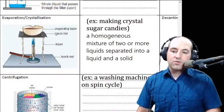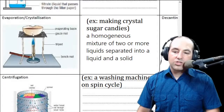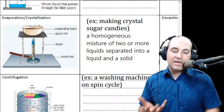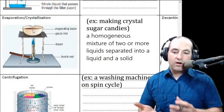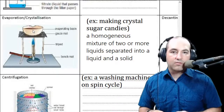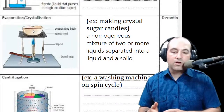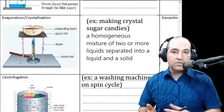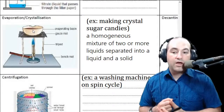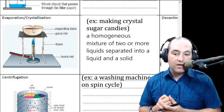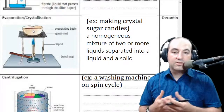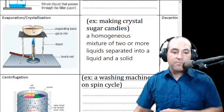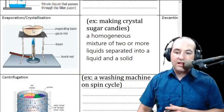Evaporation: if you simply take your evaporating dish — a little porcelain dish — and heat it up, eventually the water will evaporate and leave behind whatever was dissolved in it. This is a good way to separate the liquid and solid parts. The drawback is that the liquid just goes away as vapor, so you're only left with the solid.